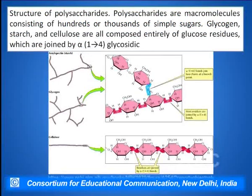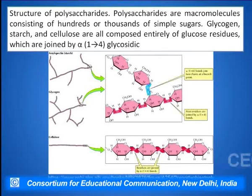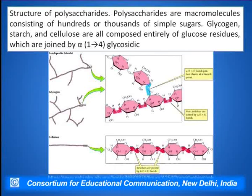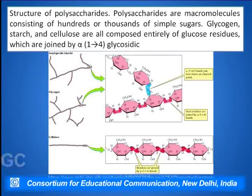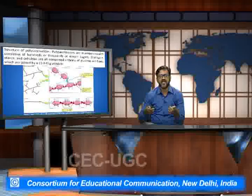The polysaccharides are macromolecules which contain hundreds and thousands of simple sugars such as glucose, galactose, and fructose in a combined form. Glycogen, starch, and cellulose are basically the polysaccharides present in the various eukaryotic systems. They are joined to one another with the help of 1-4 glycosidic bonds, in which the alpha-1 carbon of one sugar combines with the alpha-4 carbon of the other sugar molecule to form the alpha 1-4 glycosidic linkages.